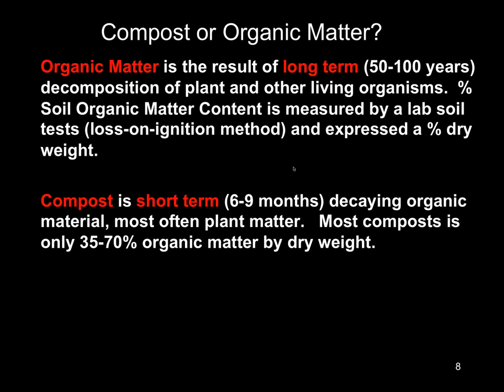First, we have to understand the difference between the word compost and the word organic matter. Organic matter is what we test for when we look at a soil test — it's the percent of dry weight in the soil. Compost is really very short-term decaying organic material, often plants, and most compost is only about 35% to 70% organic matter by dry weight.